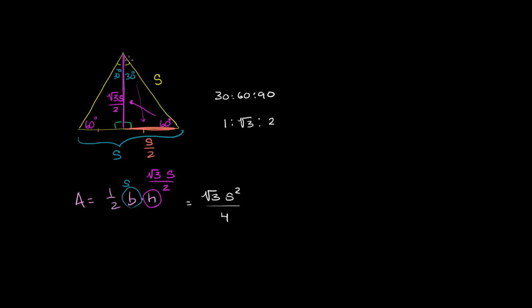If you had an equilateral triangle where each of its sides were 2, then this would be 2 squared over 4, which is just 1, so it would be square root of 3. So we just found a generalizable way to figure out the area of an equilateral triangle.